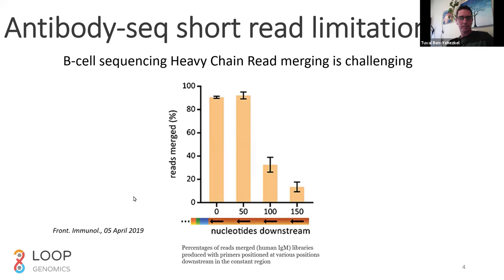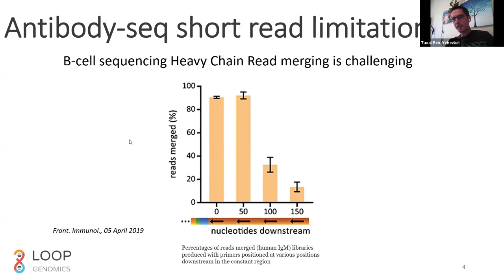This is from a publication showing how the fraction of heavy chains that you can actually merge — the forward and reverse reads — drops based on where you place your primers for sequencing. This problem is completely solved with our technology because you can place your primers wherever you want. You can make a full-length read, a 1.5 KB read, and using Loop long-read sequencing and an Illumina sequencer, you will be able to generate a single-molecule long read that spans the entire heavy chain and completely solve this limitation.